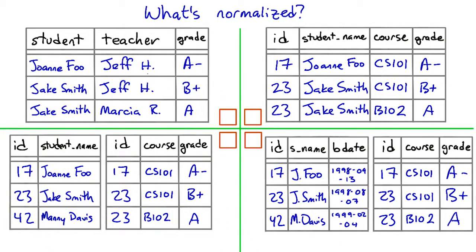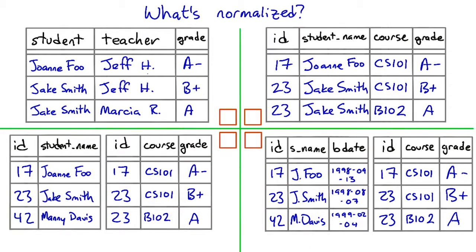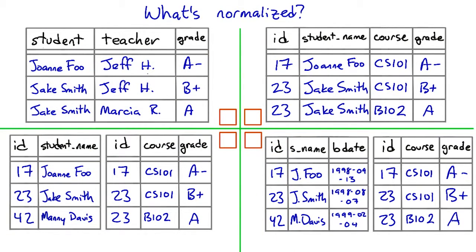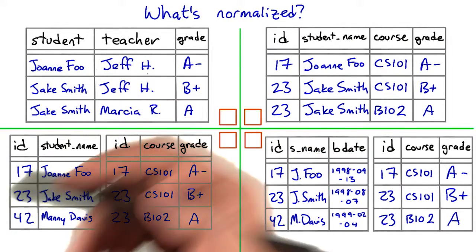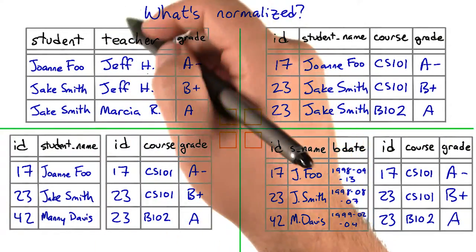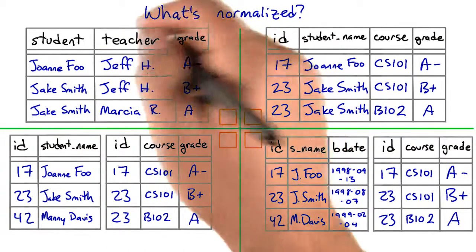In this first case, we have three columns: student name, teacher name, and the student's grade. One of the rules for normalization is that we have to have a unique key that says what each row is about. But names aren't unique — if we have two students named Jake Smith or Pavel Ivanov, this isn't going to work well. Also, if a student is taking two courses taught by the same teacher, like a CS and a math course, we'll have problems there too. So this is not normalized.